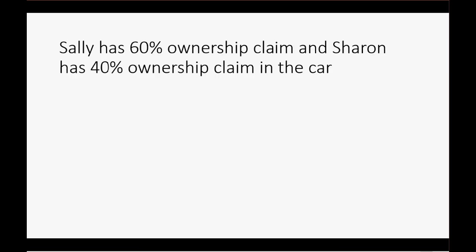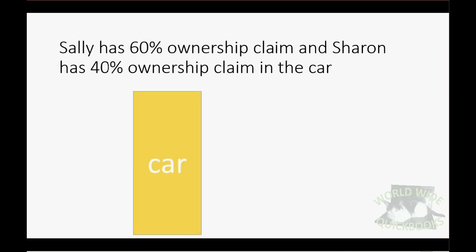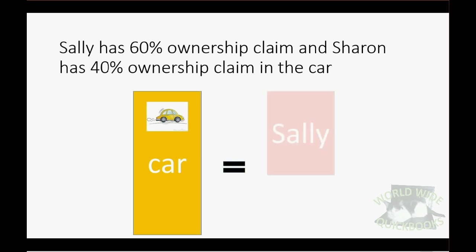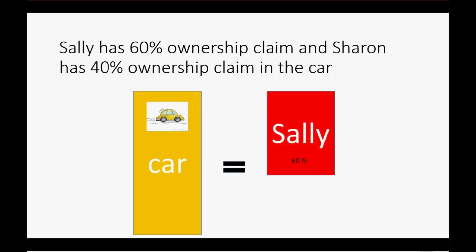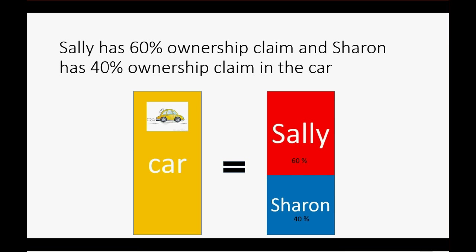Sally has 60% ownership claim or ownership rights in the car and Sharon has 40% ownership claim or ownership rights in that very same car. We could say that the car is equal to the value of who owns the car — Sally owns 60%, Sharon owns 40%. Sally has 60% owner's equity in the car and Sharon only has 40% owner's equity in the car.